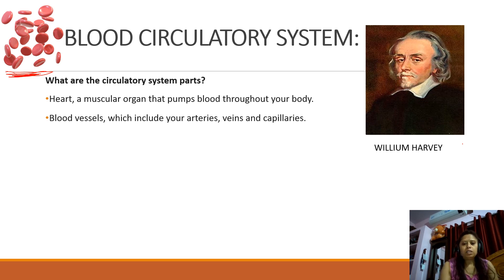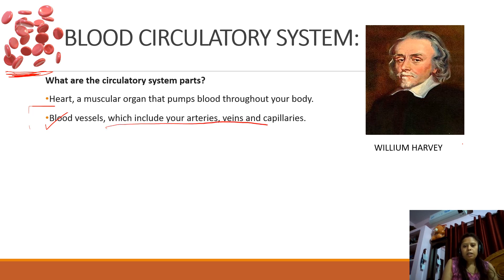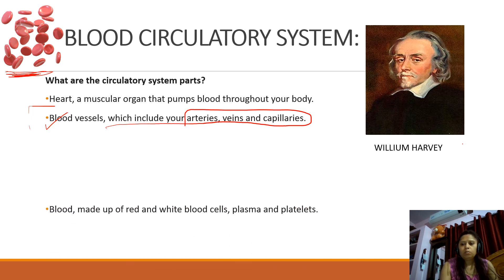The second part of the circulatory system is blood vessels. Blood vessels are tube-like structures, and there are three main types: arteries, veins, and capillaries. These tube-like structures help blood flow through them. The third part is blood, which is made up of red blood cells, white blood cells, plasma, and platelets.